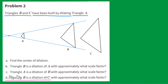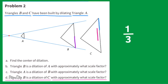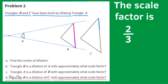Part D: Triangle B is a dilation of C. Approximately two-thirds of the side length from triangle C fits into the corresponding side length of triangle B. So the scale factor is approximately two-thirds.